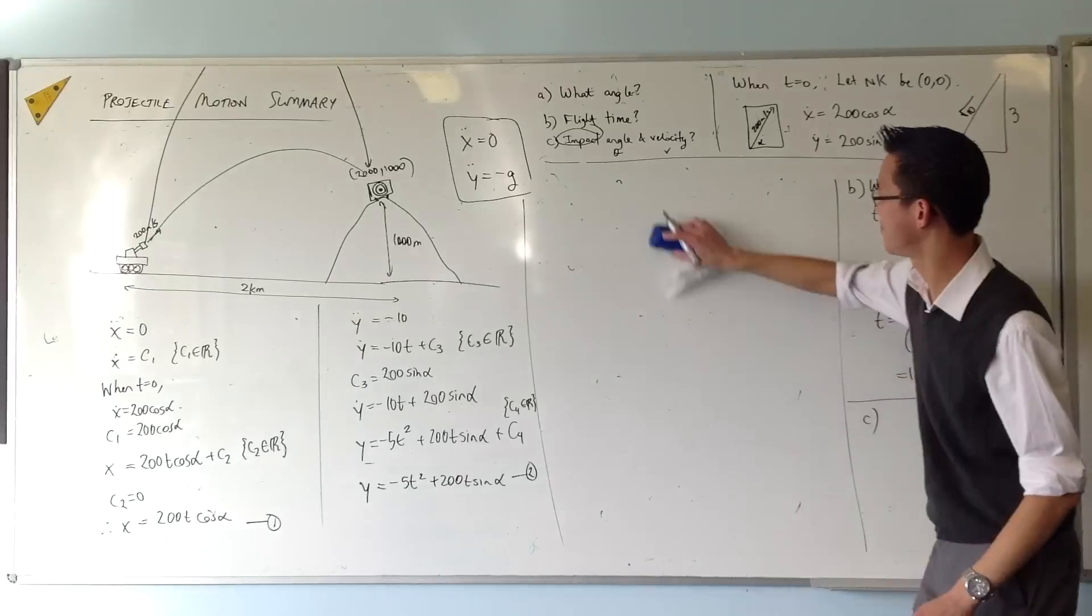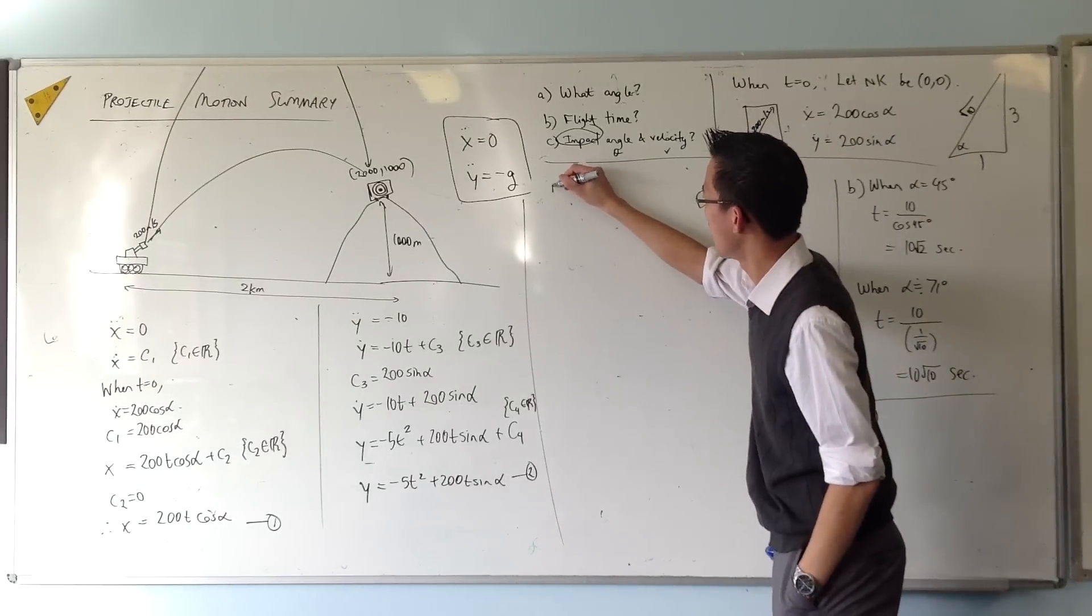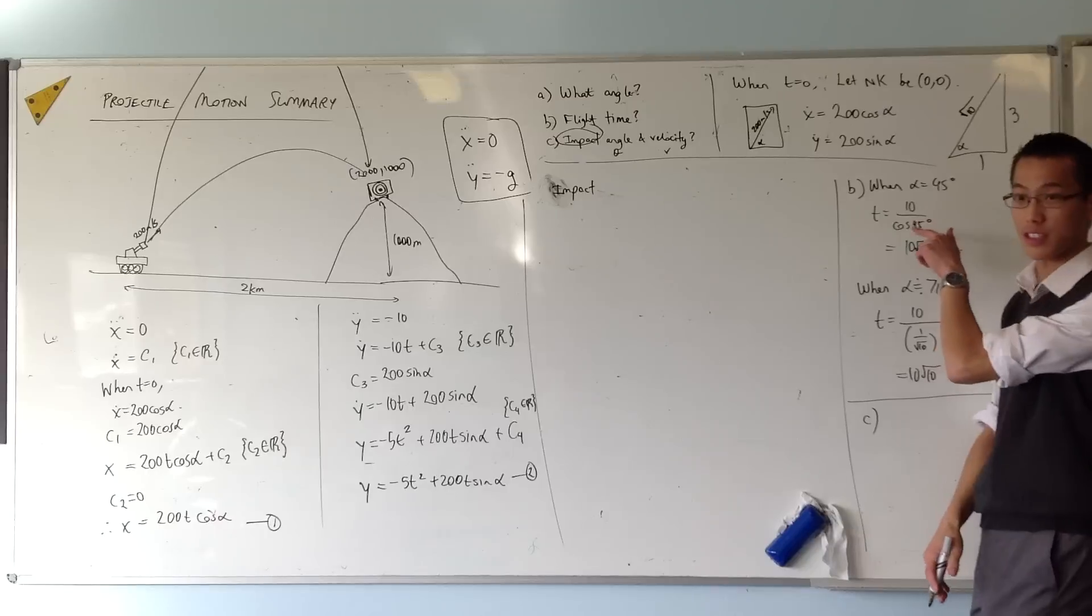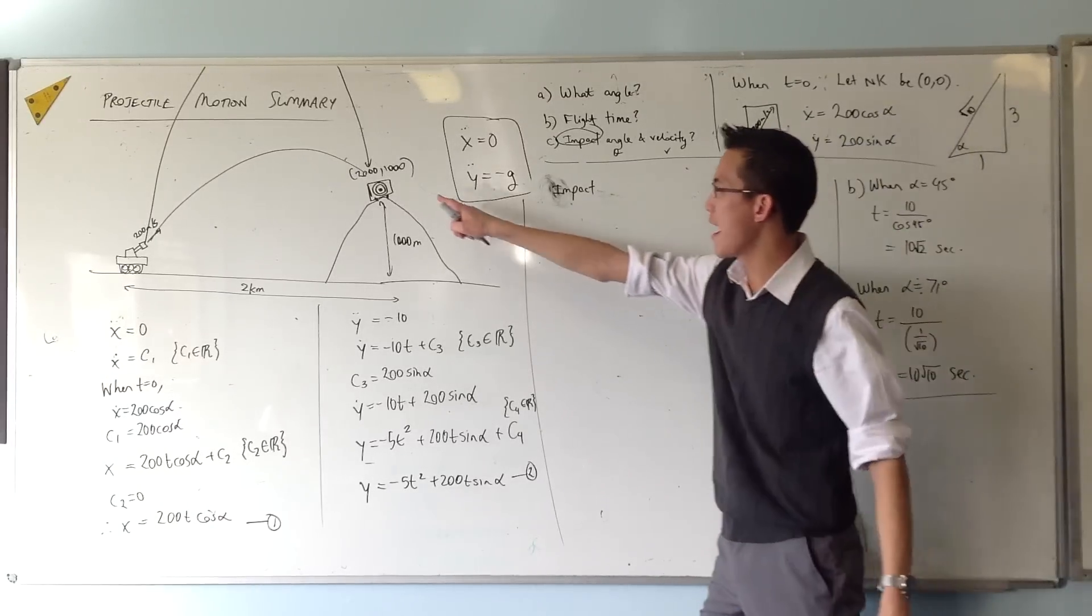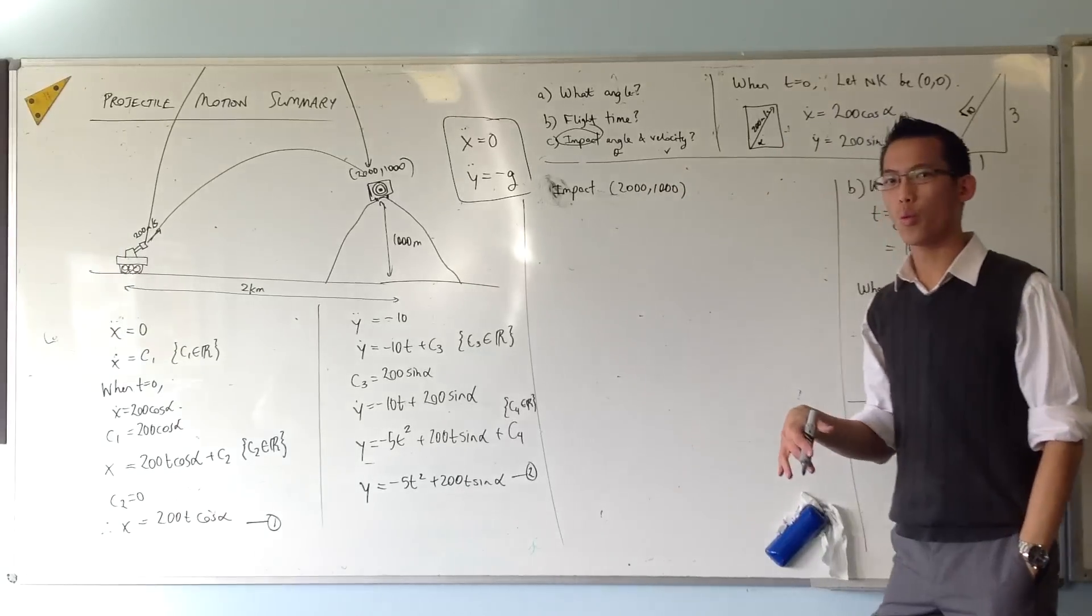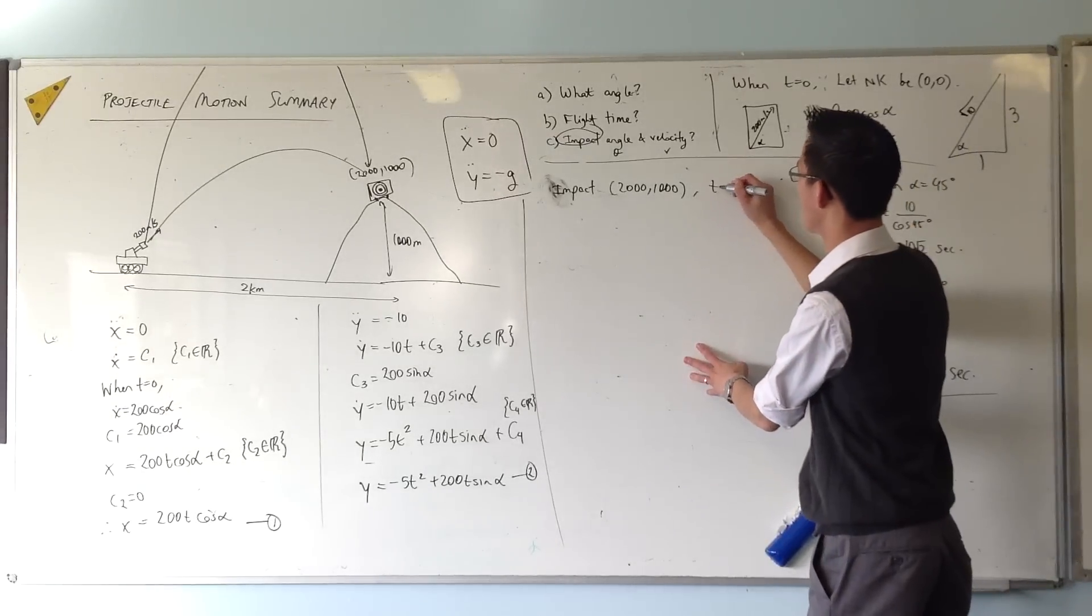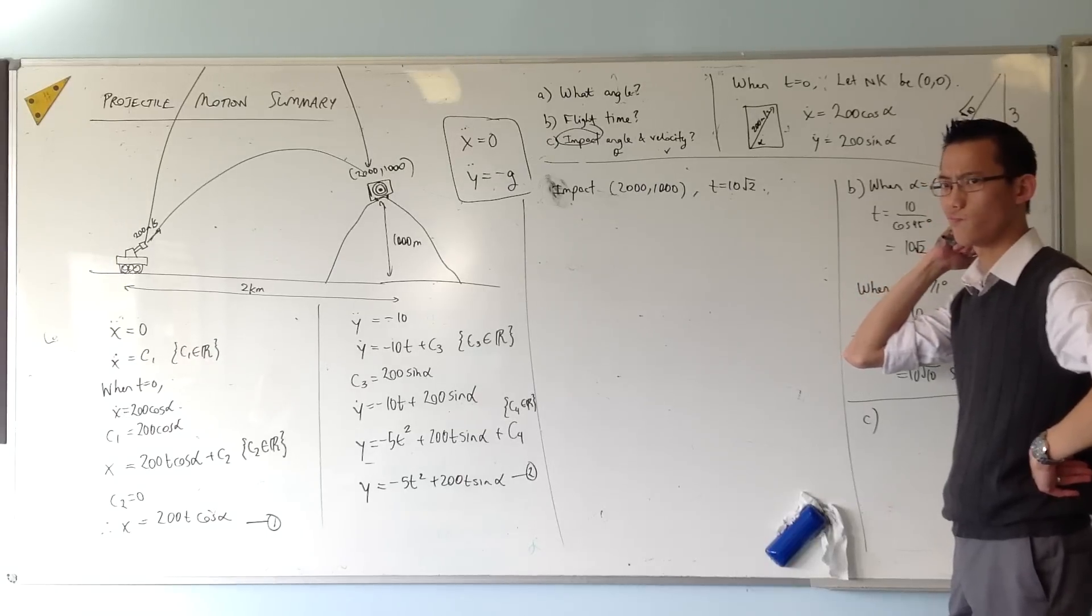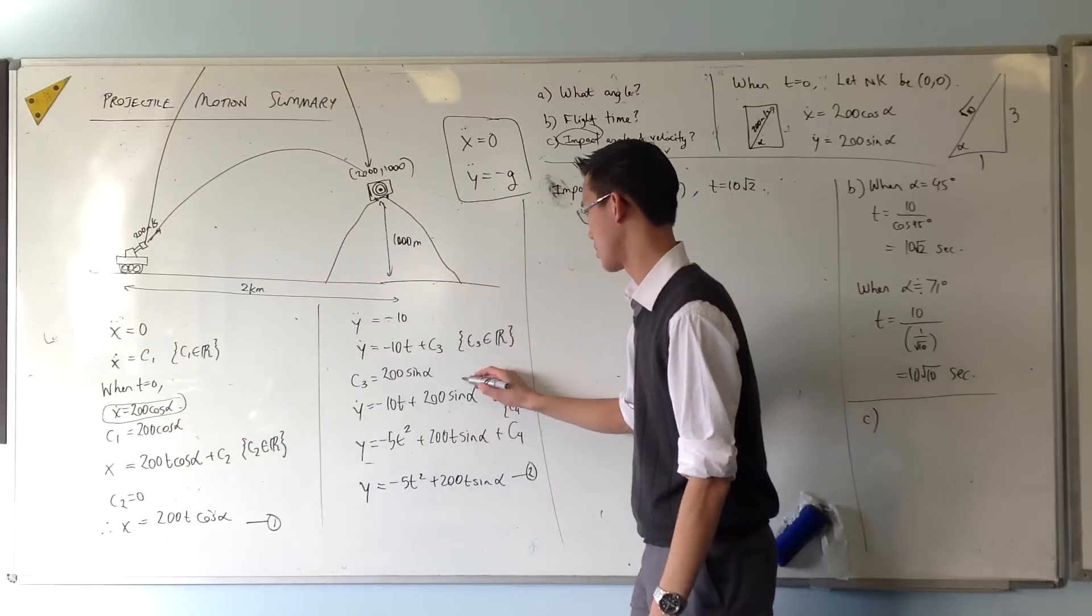So how do I work that out? Moment of impact. We'll take one case at a time, I know we've got two. Let's just do the first one because it's a bit simpler. I know three things about the moment of impact. I know where it takes place, and I also know when it takes place, namely at 10 root 2. So which equations am I going to throw this into? Here's x dot and here's y dot.